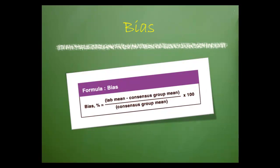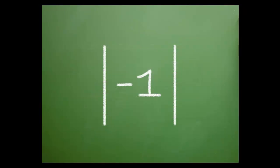subtract the consensus group mean from the laboratory's mean, and then divide by the consensus group mean. Convert the result to a percent by multiplying by 100. When we use bias in the equation to calculate